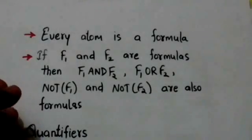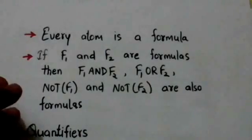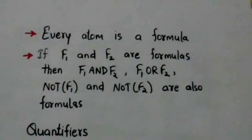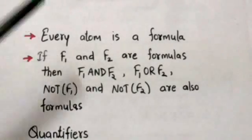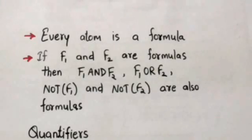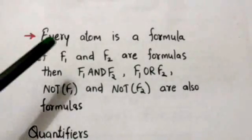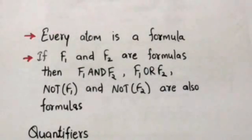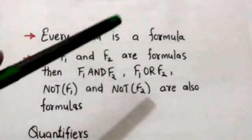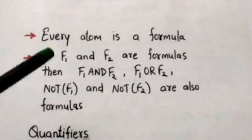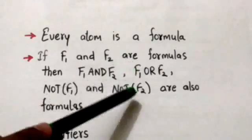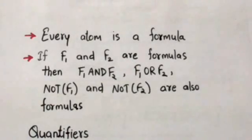The next topic is the tuple relational calculus formula. Every atom is a formula. If f1 and f2 are formulas, then f1 AND f2, f1 OR f2, NOT f1, and NOT f2 are also formulas.